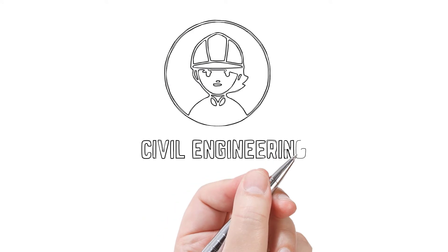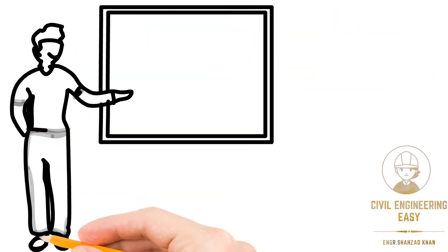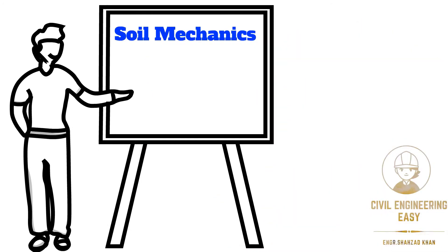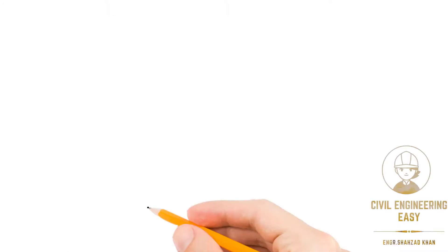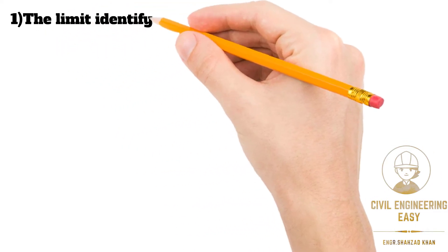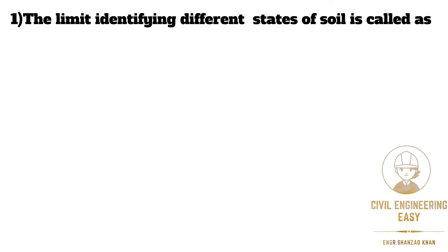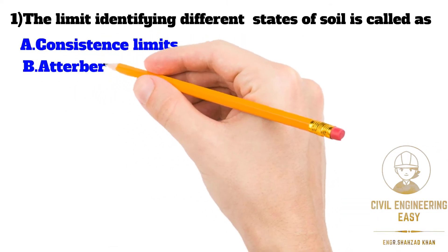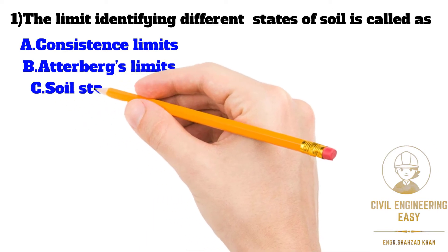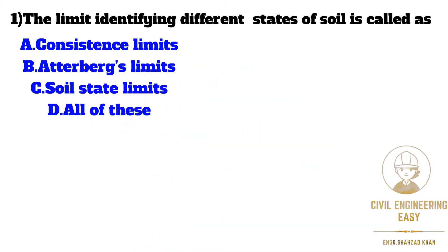Welcome back, you're watching YouTube channel 7 Engineering Easy. This is the second chapter of the video series where I will be solving MCQs of soil mechanics. In MCQ number one, it is given that the limit identifying different states of soil is: option A is consistency limits, option B is Atterberg's limits, option C is soil state limits, and option D is all of these.